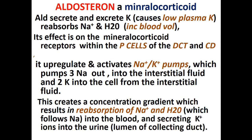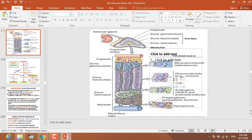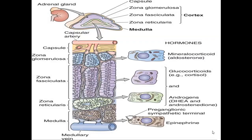Let's start with aldosterone. Aldosterone is your mineralocorticoid, coming from the zona granulosa. Here is your adrenal gland, present at the top of your kidney. The adrenal gland has different layers of the cortex. Below the capsule, the outermost layer is known as the zona granulosa, then zona fasciculata, and then zona reticularis as the innermost layer. The zona granulosa cells produce your mineralocorticoids, which are corticoids mainly concerned with the minerals sodium and potassium.